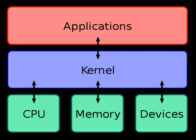The kernel's interface is a low-level abstraction layer. When a process makes requests of the kernel, it is called a system call. Kernel designs differ in how they manage these system calls and resources. A monolithic kernel runs all the operating system instructions in the same address space for speed. A microkernel runs most processes in user space, for modularity.